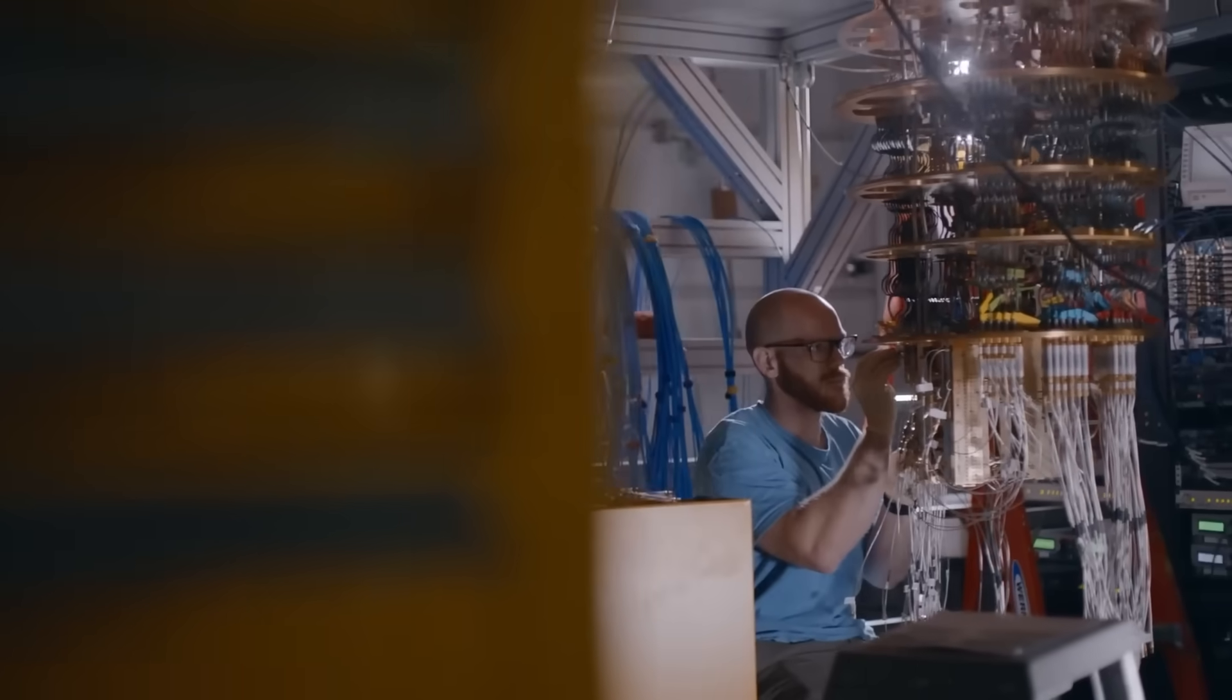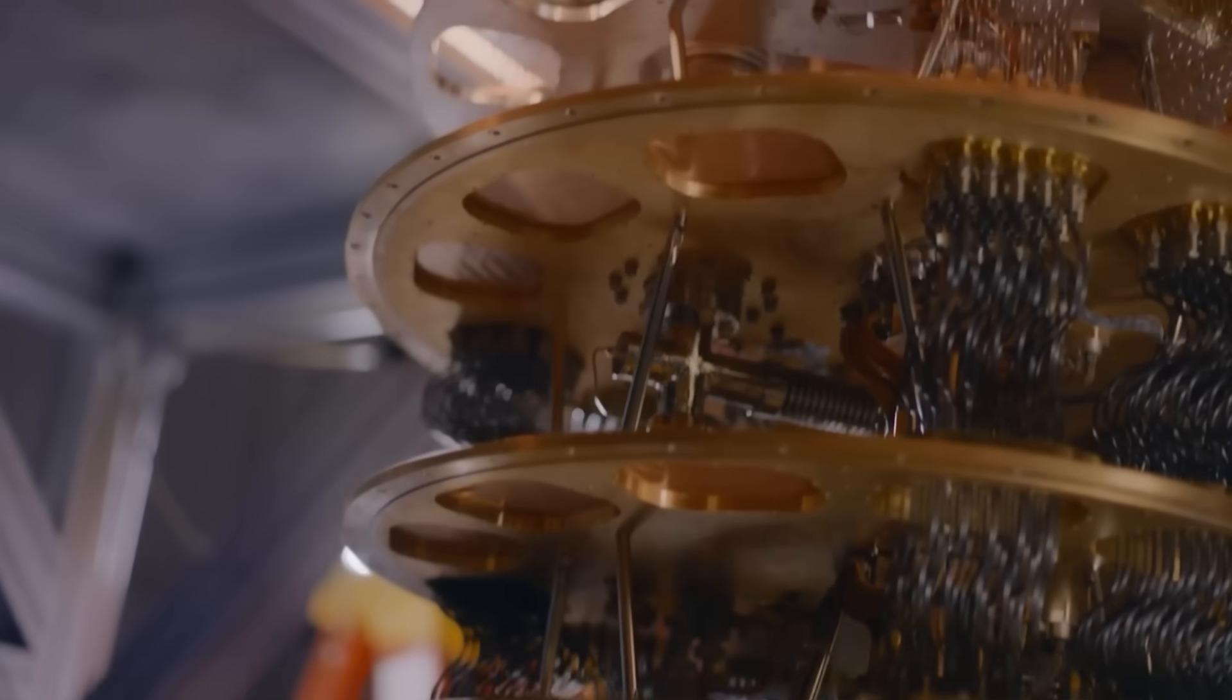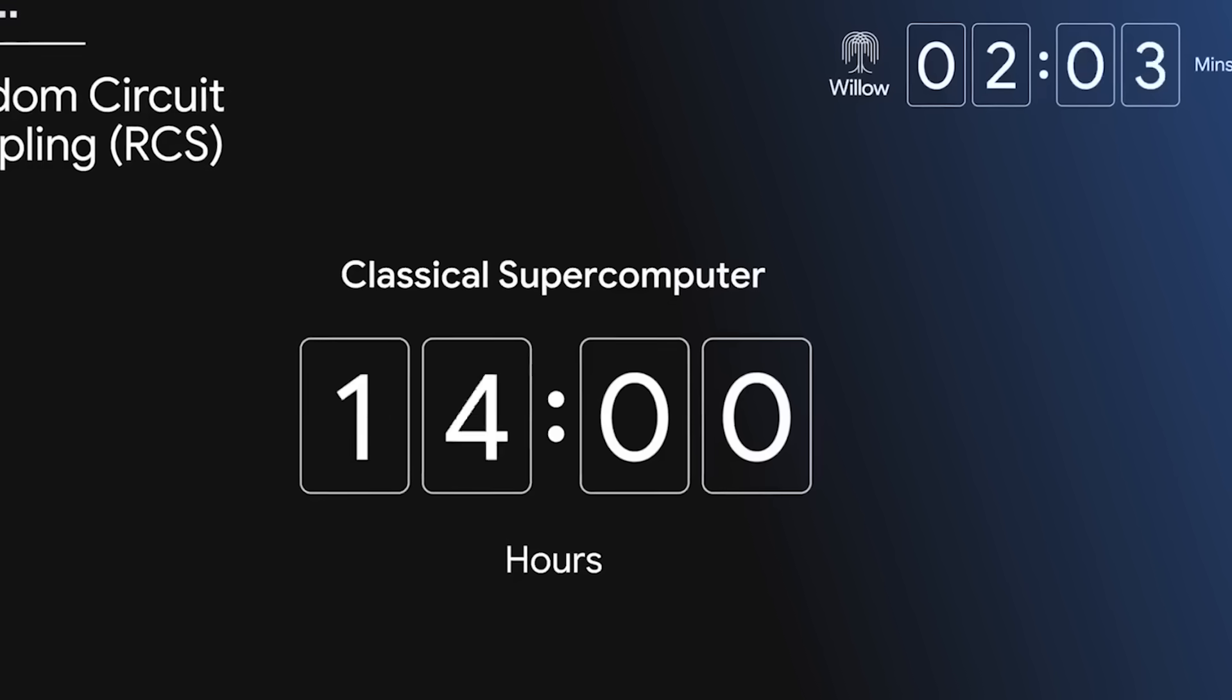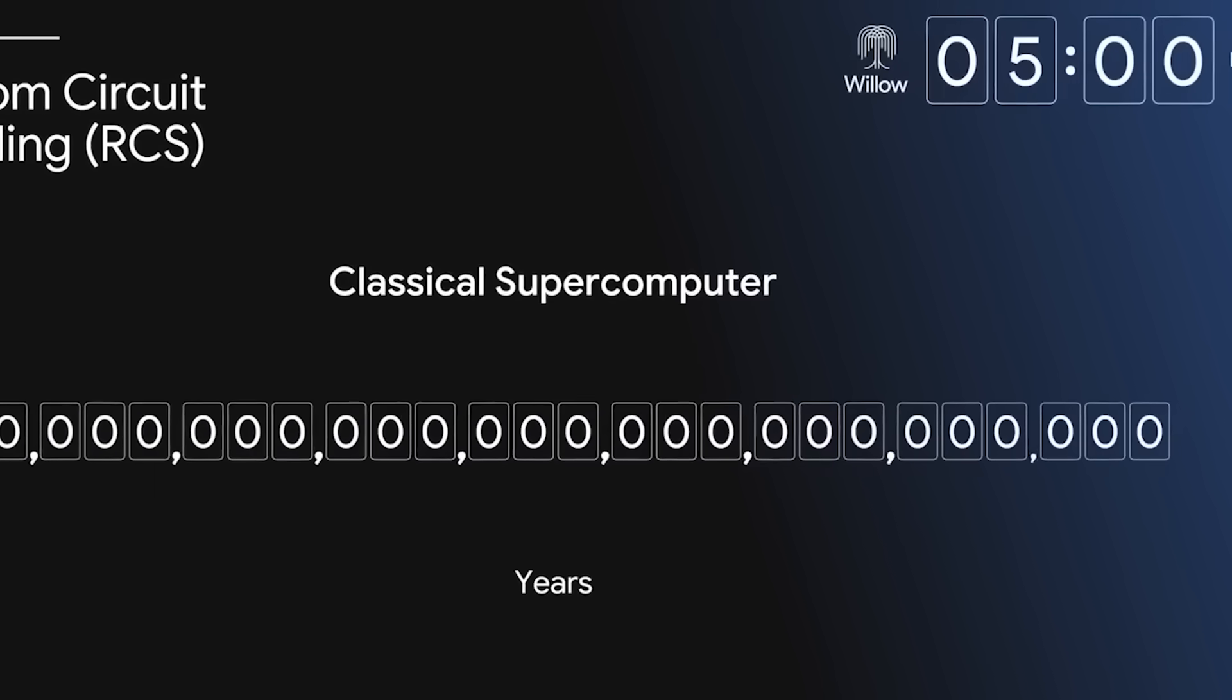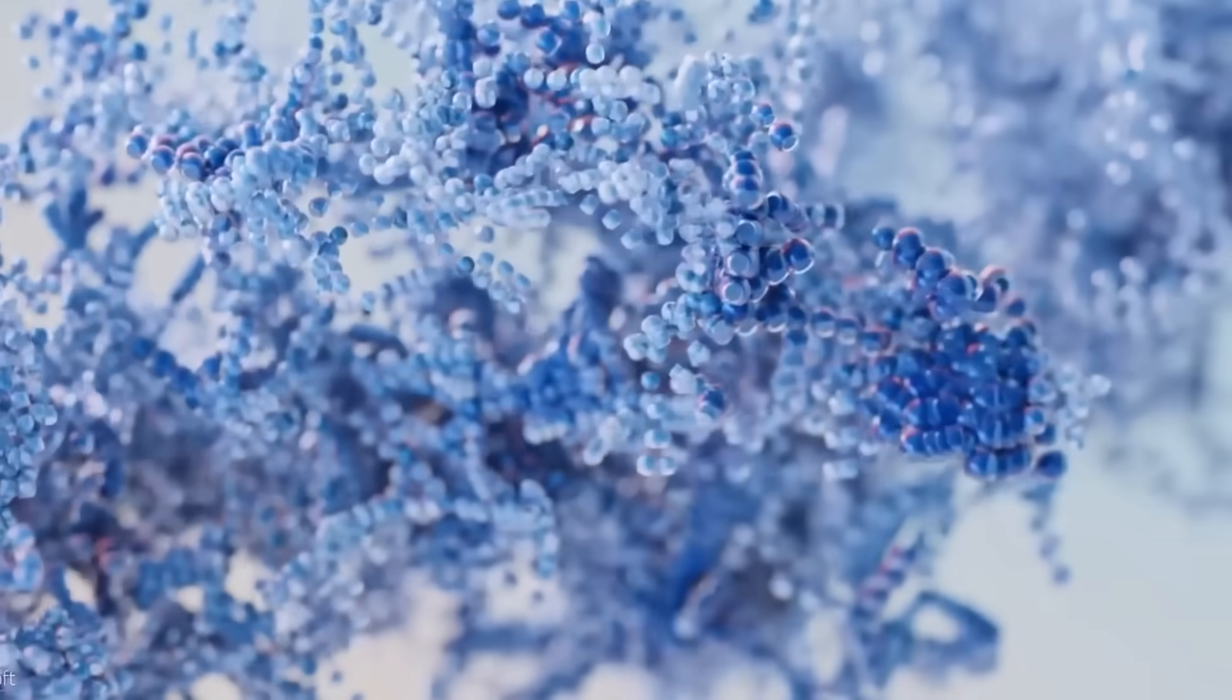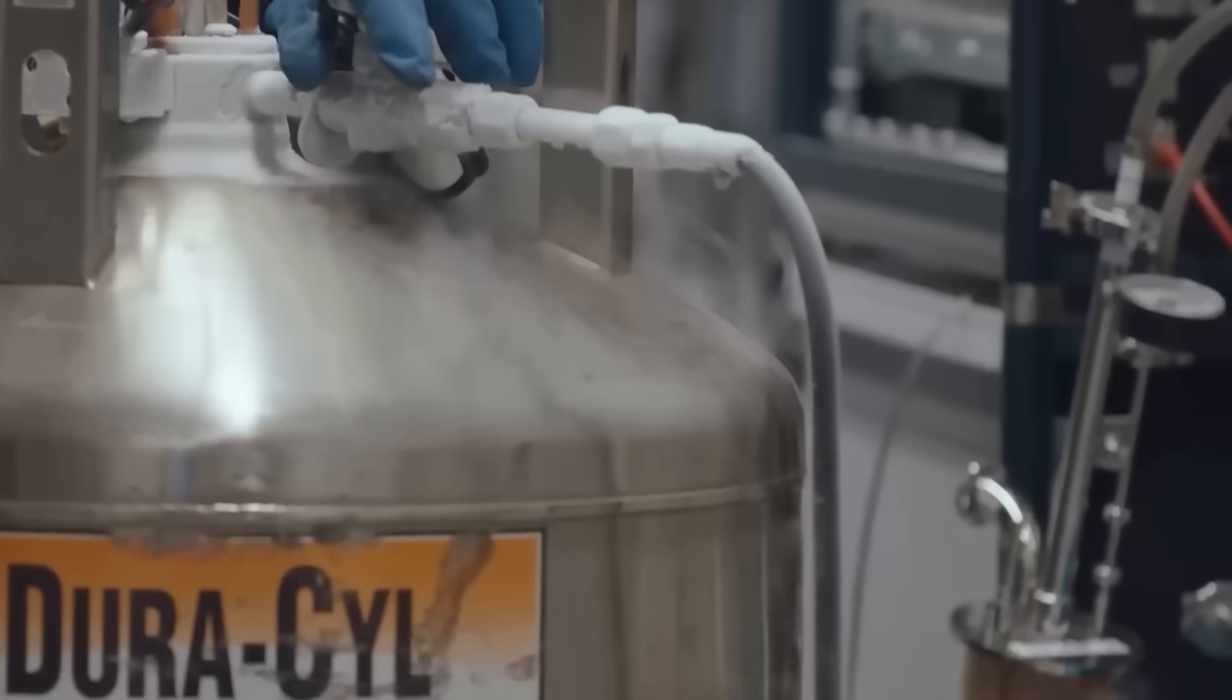In 2019, Google made history when its 53-qubit Sycamore processor performed a complex random sampling task in just 200 seconds, something that would have taken the world's fastest supercomputer, Summit, around 10,000 years. The paper, published in Nature, coined the term quantum supremacy, marking the first time a quantum device decisively outperformed a classical one.